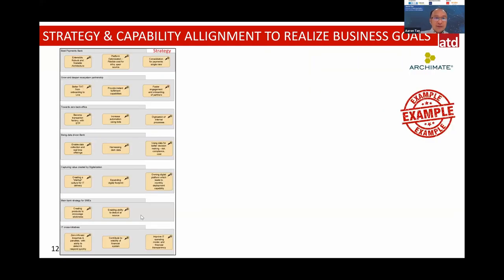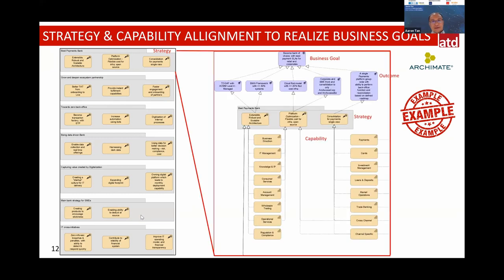Here is an example of the strategy layer — every department runs their own strategy using ArchiMate symbols. For example, in the payment layer's strategy, we can see that this particular payment is supported by many capabilities. Each capability realizes an outcome, the outcome realizes the business goal, and the business goal belongs to a particular department. This shows how architecture and capabilities help achieve goals for key stakeholders.